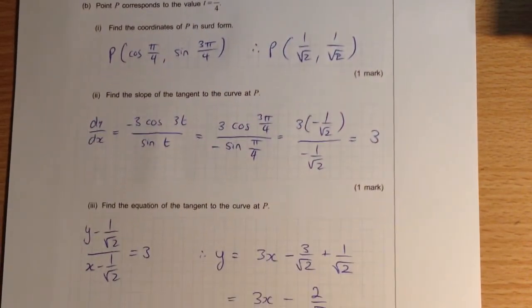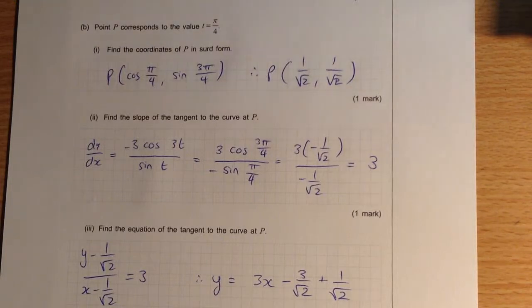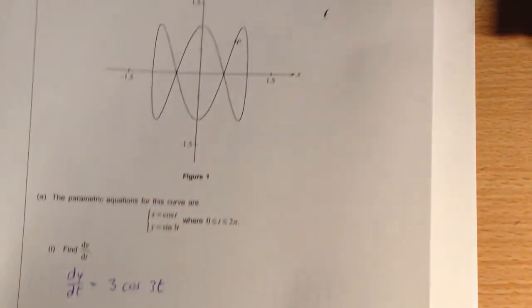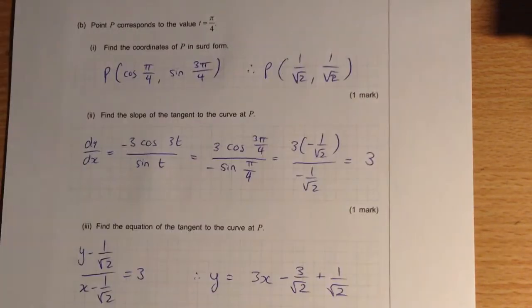We're then on to the final stretch here, and we're told that the point P, which is a point on this curve that is described by two parametric equations, is actually given at a value of t equals π/4. What we do is we are given the original parametric equations in the question, so it's simply a matter of substitution.